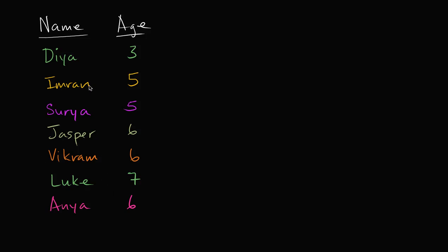Let's say we're having a birthday party, and these are the kids at the birthday party. All of the kids have a bunch of different ages, and what we are curious about is how many kids of each age do we have? To help think about that, we can draw what is called a line plot.